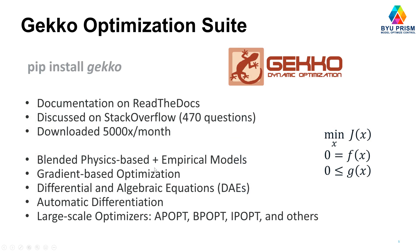So first of all, a little bit about Gecko Optimization Suite. You can install with pip install Gecko. And it will install it to your computer and your Gecko and your Python distribution. There's extensive documentation on Read the Docs. Also, many questions on Stack Overflow. So we appreciate the community that's out there that are using it and giving helpful feedback questions as well to build out some of the documentation.